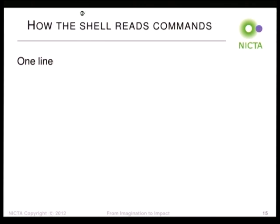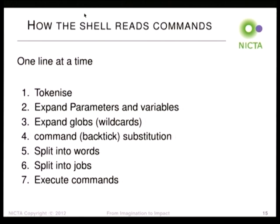How the shell reads commands: it reads them one line at a time. The first thing it does when it gets a line is tokenize it — divide it on whitespace into tokens, and also on other syntactic elements. Once it's done that, it looks for dollar signs and expands parameters and variables. Then it looks for globs — wildcards, stars and question marks — and looks in the current working directory for files that match. Then it looks for backtick or dollar-parenthesis constructs and expands them. It then splits the result into words again based on whitespace, splits into jobs, and then runs each job.